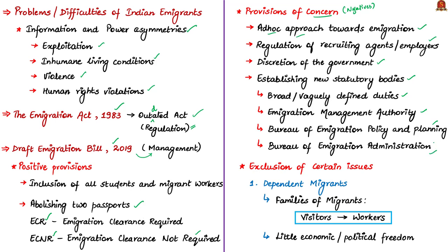The authors tell that the draft emigration bill has excluded many issues currently affecting many immigrants. The first excluded category is dependent migrants. The family members of those who have already gone abroad visit them and, after some months or years, end up settling there and also working to earn money. Some studies show that each member of emigrant families often contributes remittances sent back to India — these people are called dependent migrants.